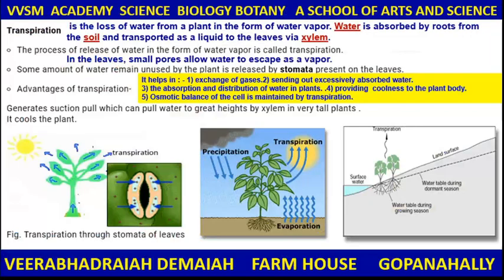Biology. Transpiration is the loss of water from a plant in the form of water vapor. Water is absorbed by roots from the soil and transported as a liquid to the leaves via xylem.